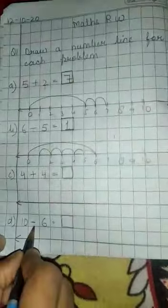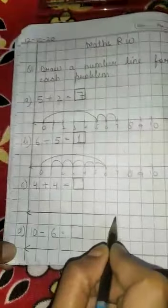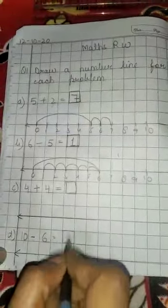C and D you will do yourself. Ye plus ki hai, we will go forward. Minus ki hai, back mein jayenge. You will draw yourself. Aap khud karhenge number line bana kar. Okay. Yee doonho questions.